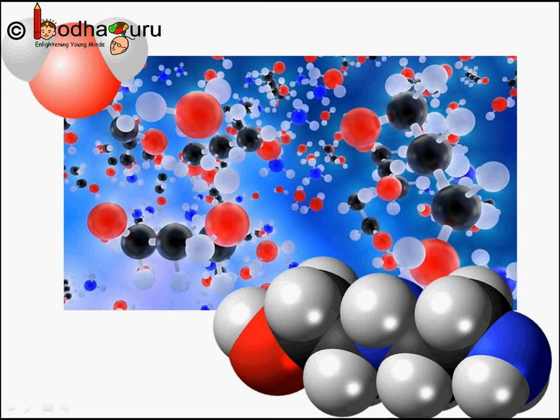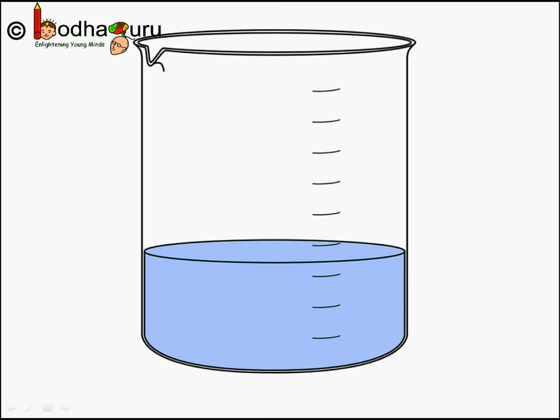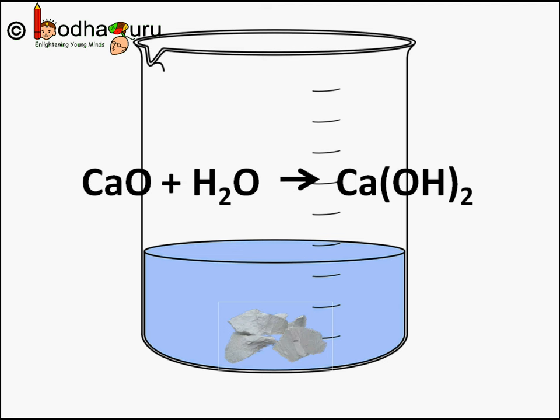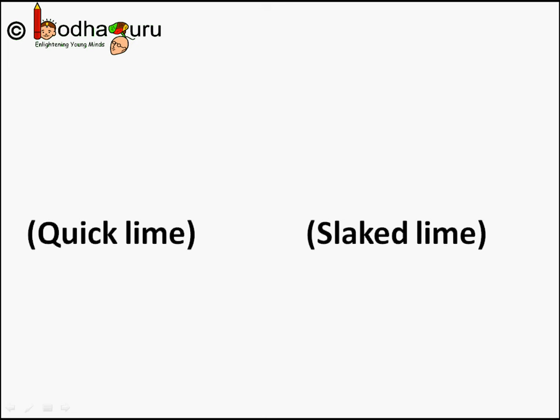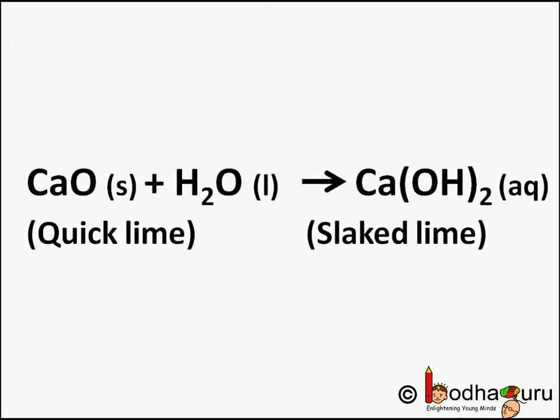So let's see what happens to molecules during a chemical reaction. Sometimes two or more substances combine to form a new substance. For example, if we drop a piece of calcium oxide, or quicklime, in water, a lot of heat would be produced. In this reaction, calcium oxide and water combine to form a single product — calcium hydroxide, which is known as slaked lime.